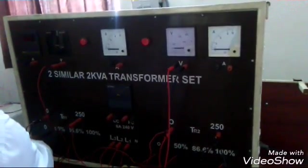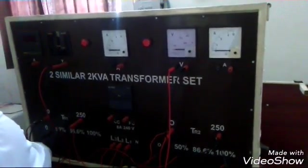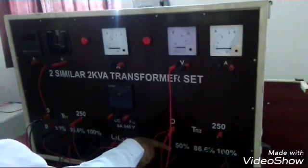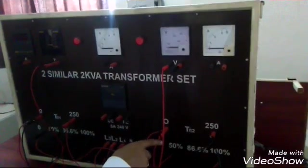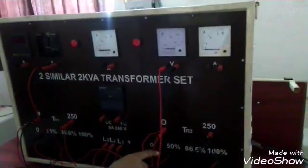The other terminal from the first transformer is connected to 50% of the main transformer. In this way, the connections are made for Scott connections.